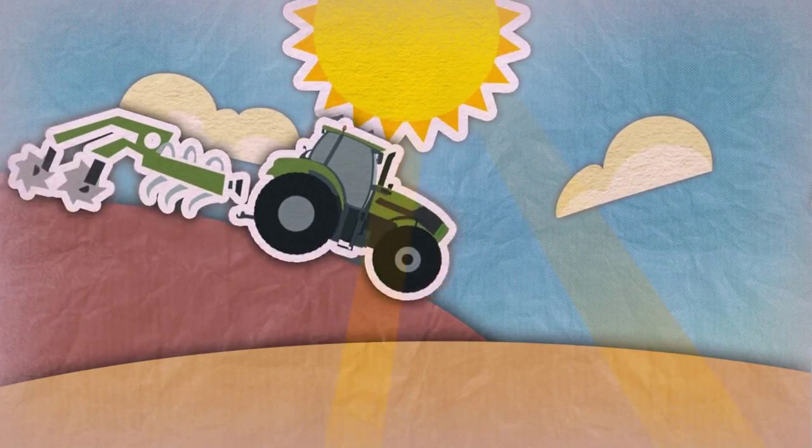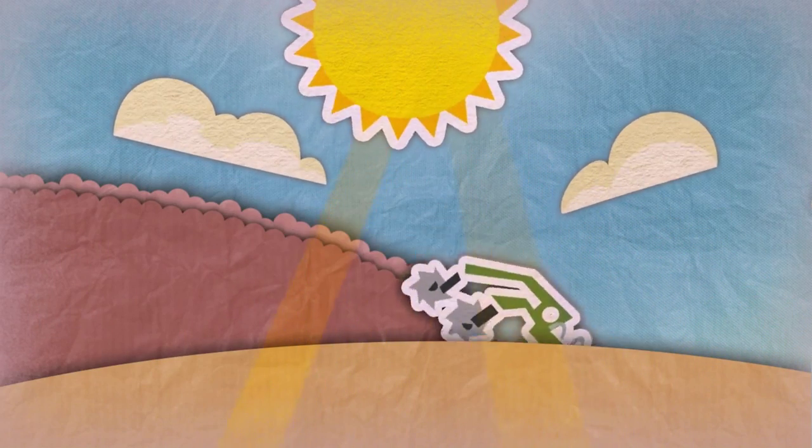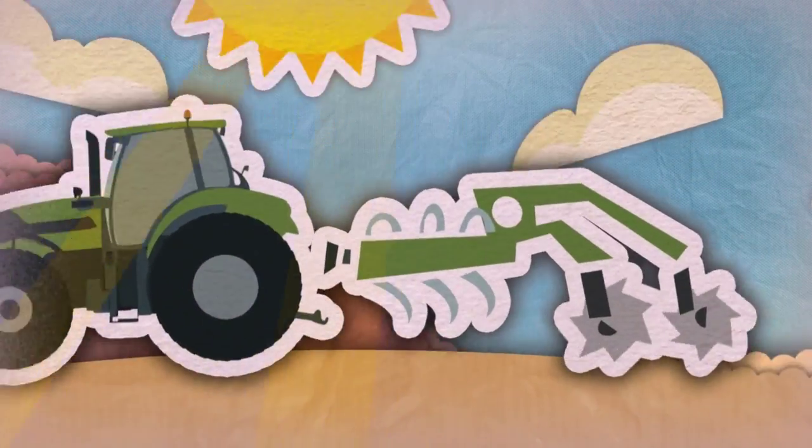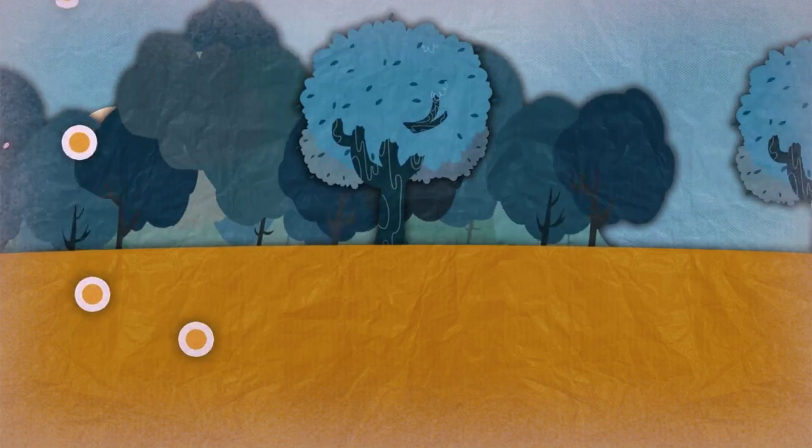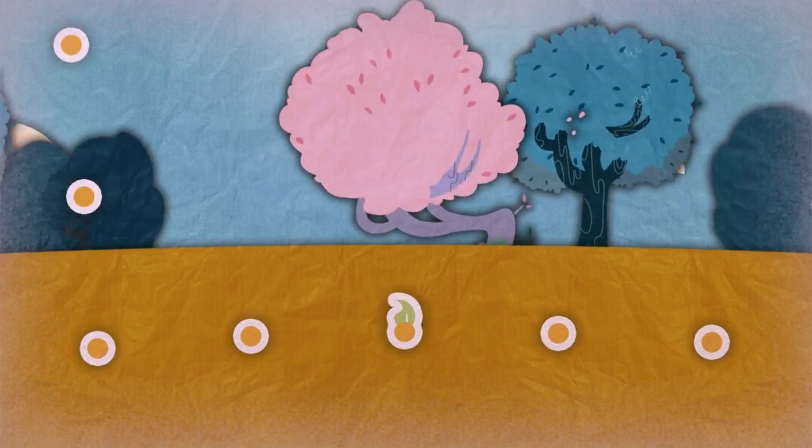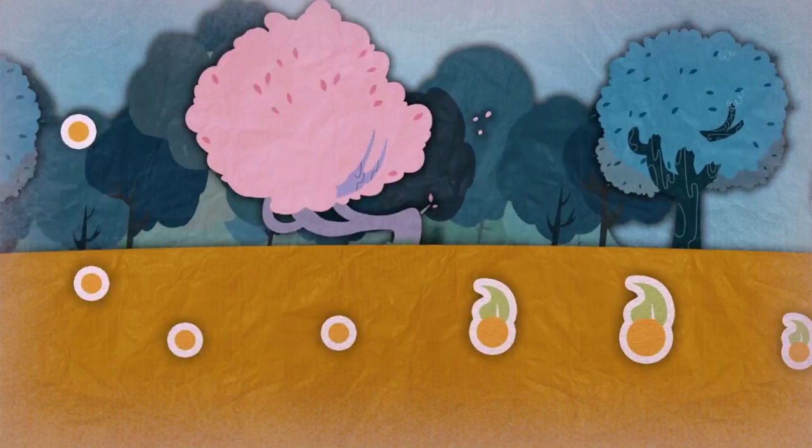A tractor is used to break up and soften the land in the fields. When the fields are ready, the seeds are planted with enough space between them and at the right depth. That way, each one can grow healthy and strong.